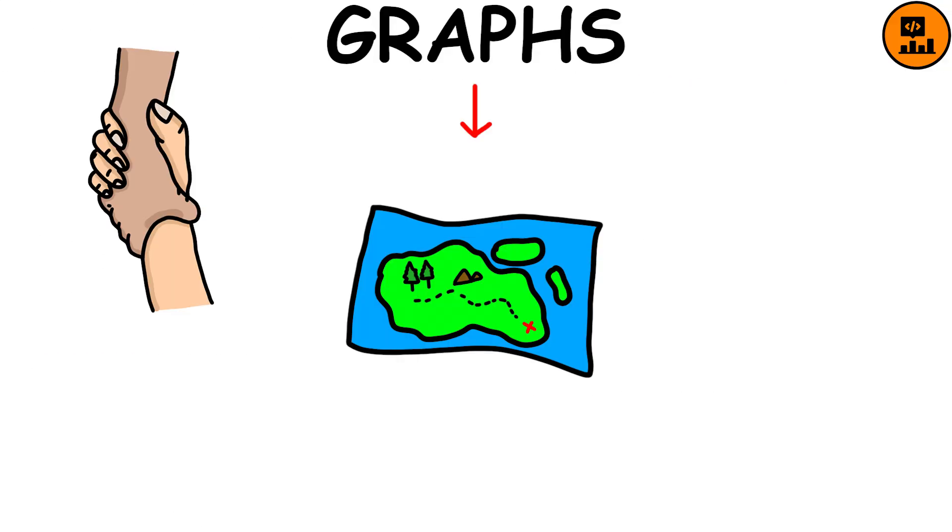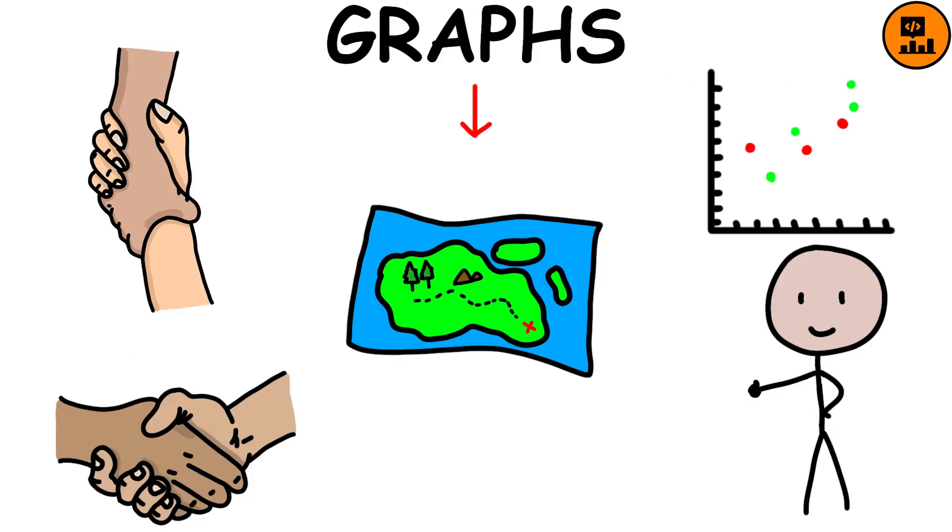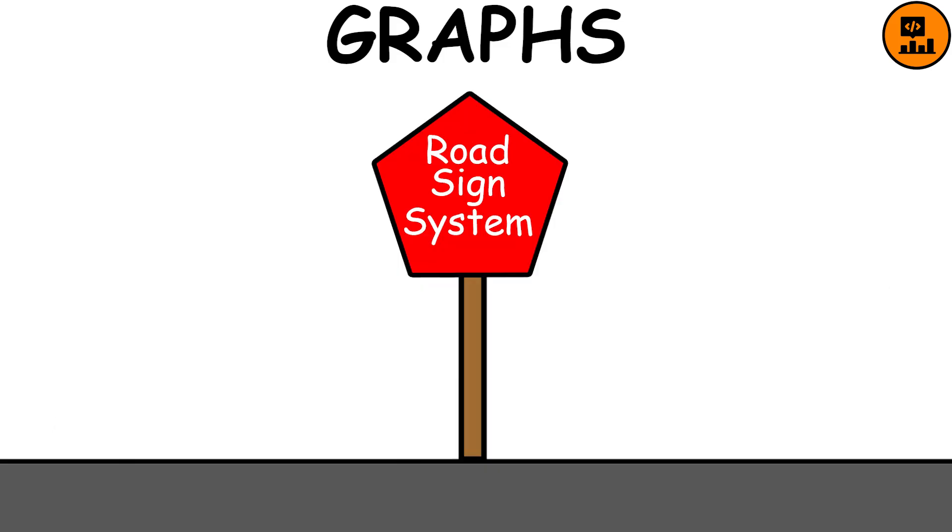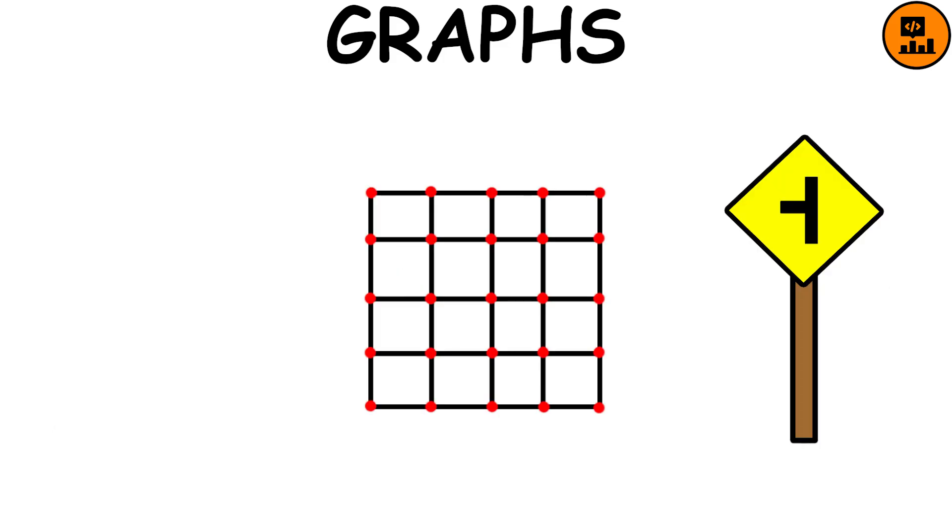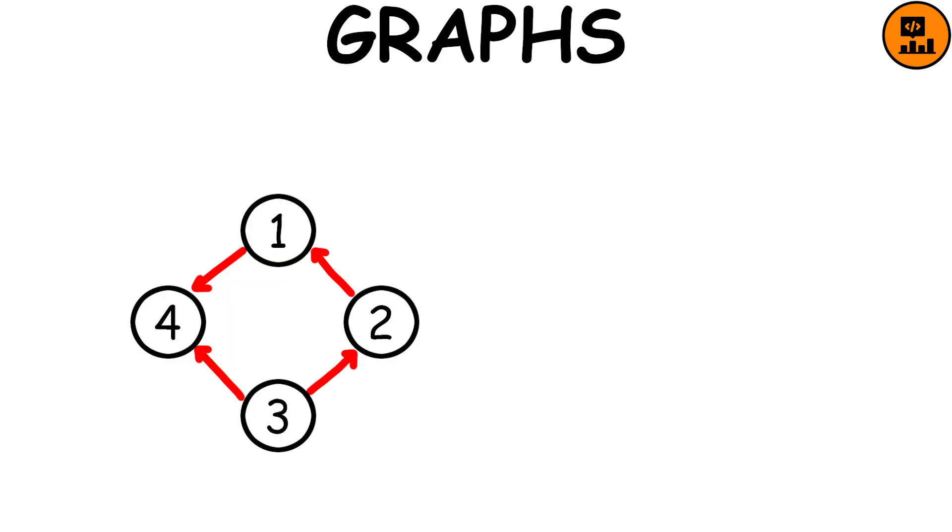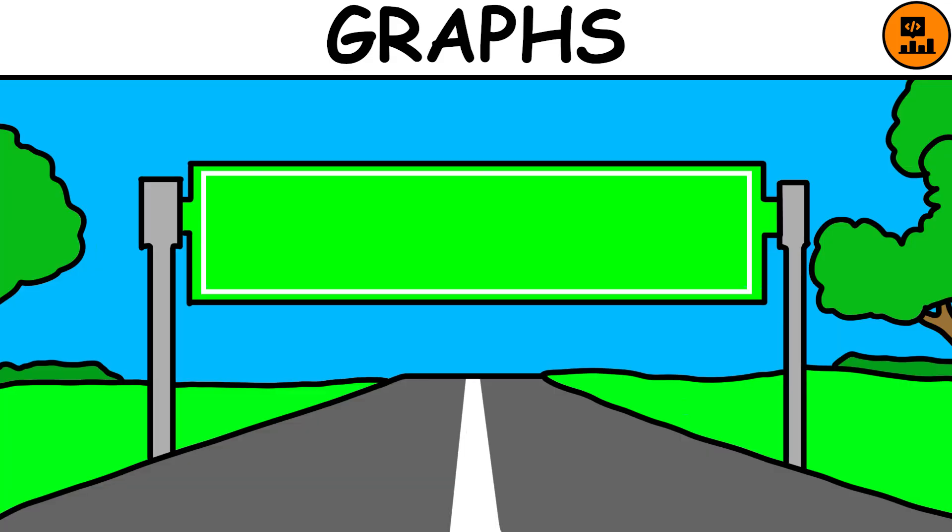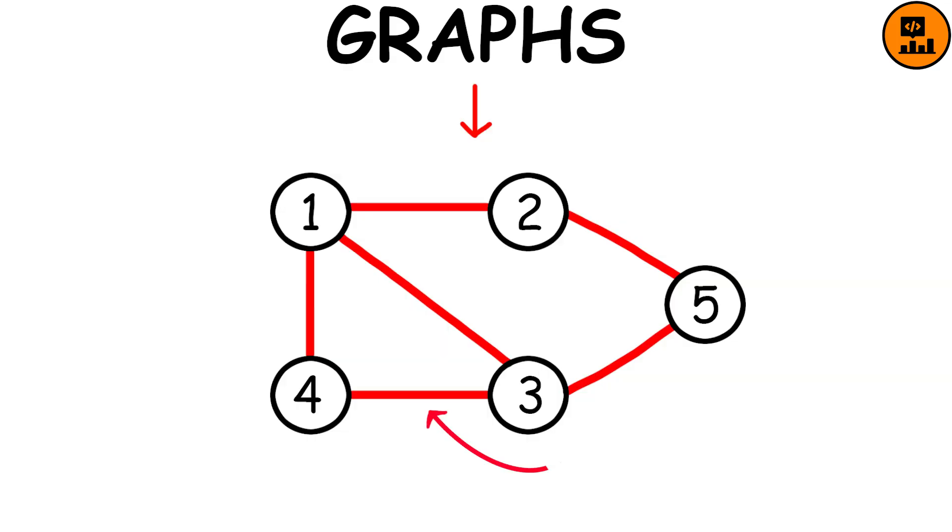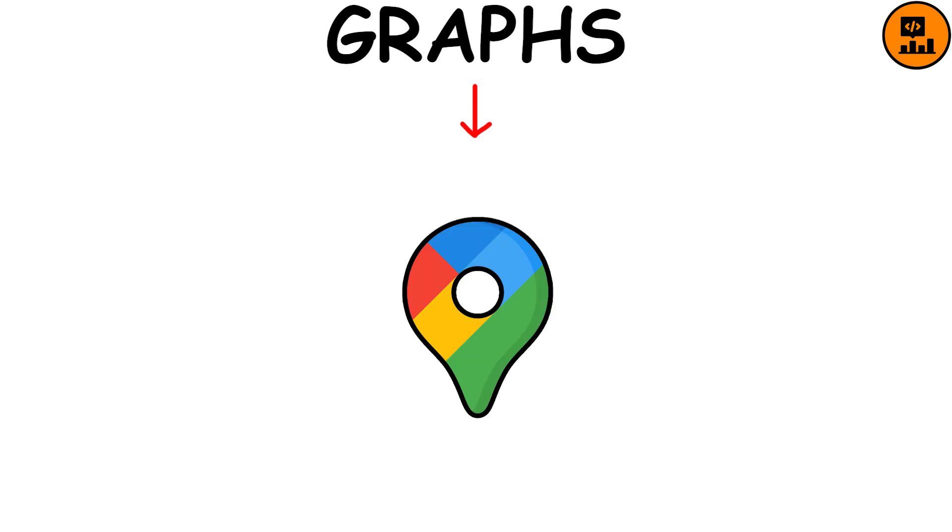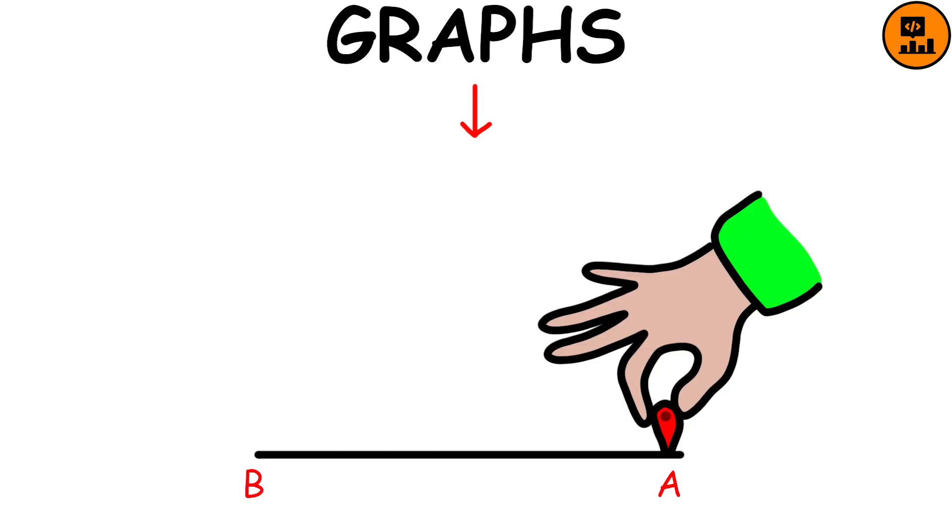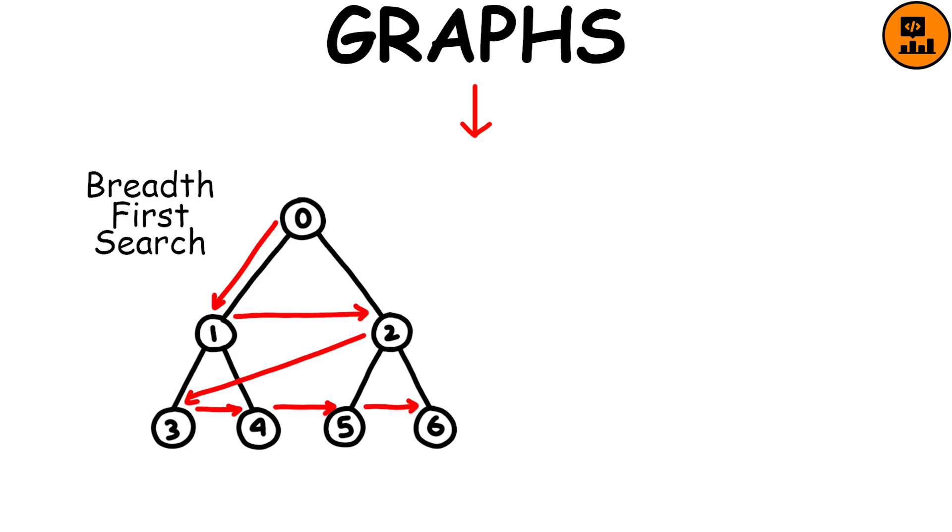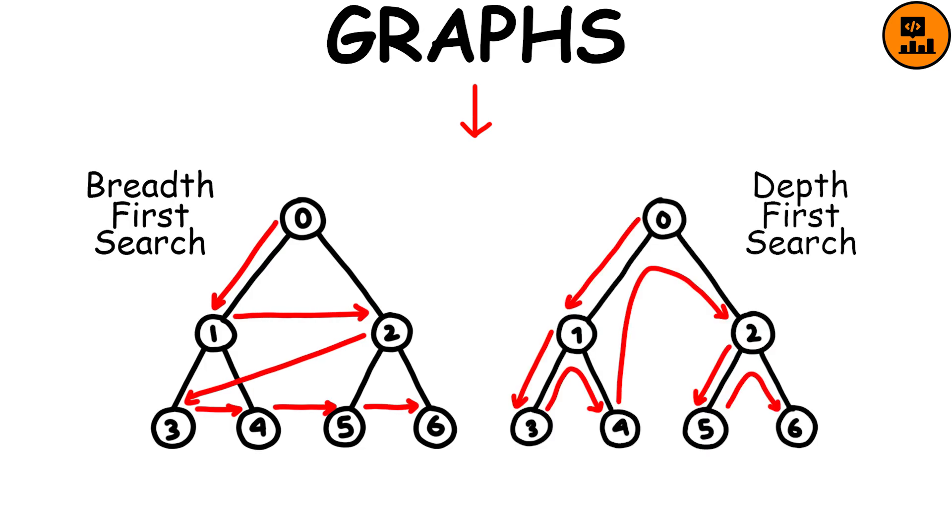Graphs are like maps that help us understand the relationships between different data points. Imagine a graph as a road sign system. Each data point is like an intersection, and the connections between them are like the roads that link them. These connections can be directed, like one-way streets, undirected, like two-way streets, or have a weight, like longer or more expensive roads to travel. Graphs are very useful for finding the shortest paths between two points, like when you use Google Maps to find the fastest route from A to B. To find these paths, you can use techniques like breadth-first search or depth-first search.